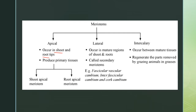The lateral meristem only occurs in mature parts of the plant — it may develop after a year or two of growth. Also called secondary meristems, they produce things like secondary xylem and the layers of bark — more mature tissues.